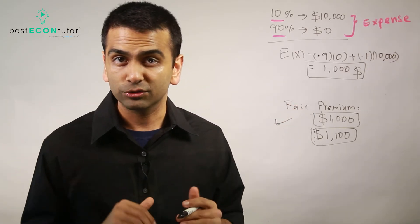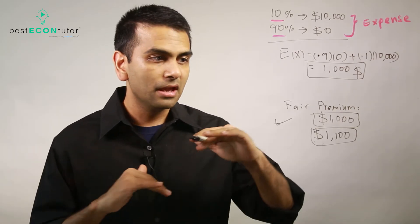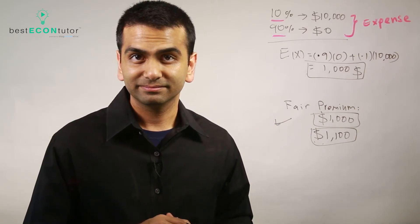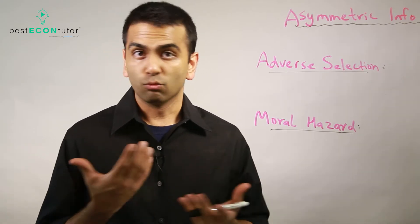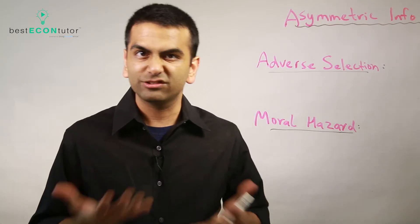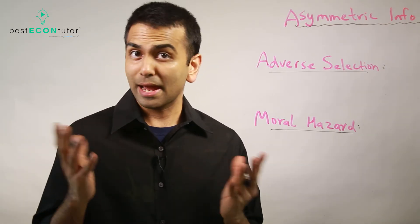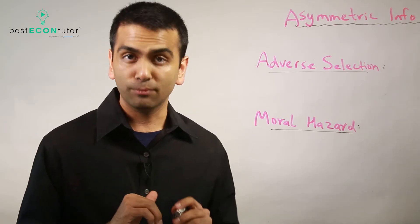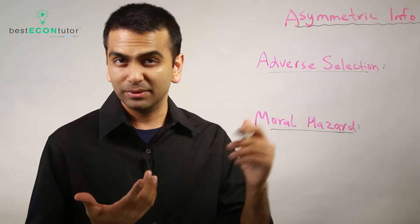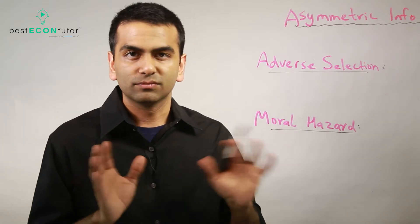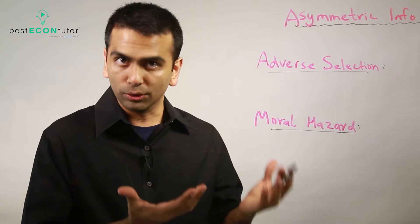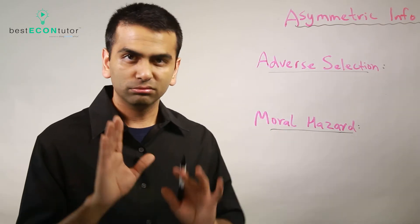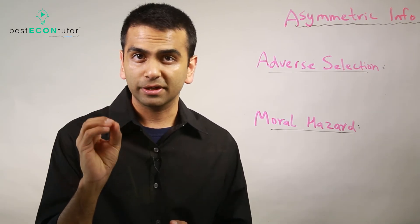Another way to avoid risk is diversification. If you're investing $1,000 in the stock market and you're wondering whether to buy Google or Apple stock, you could worry about picking the wrong one. Instead, you can split your money — $500 in Google, $500 in Apple. That way, if one of them doubles, at least half your money benefits. Diversifying is one way to get risk-averse results without taking all the risk on one option.